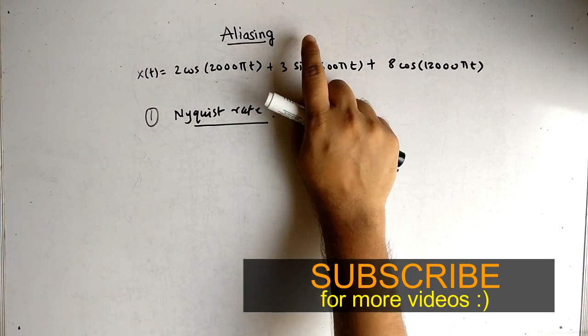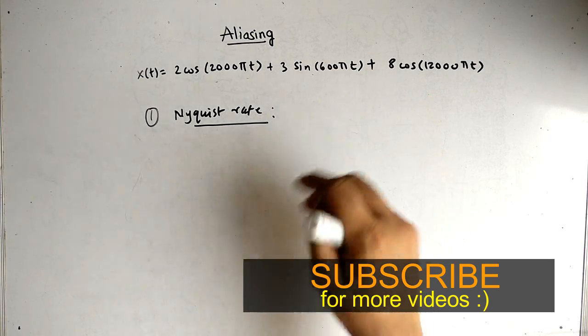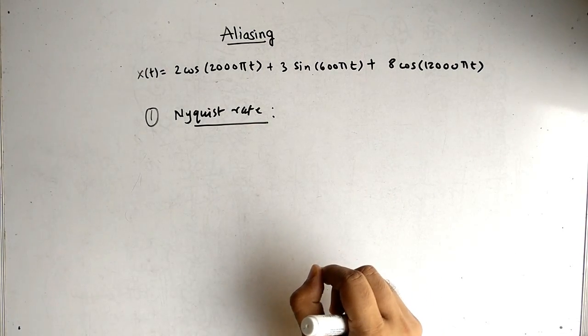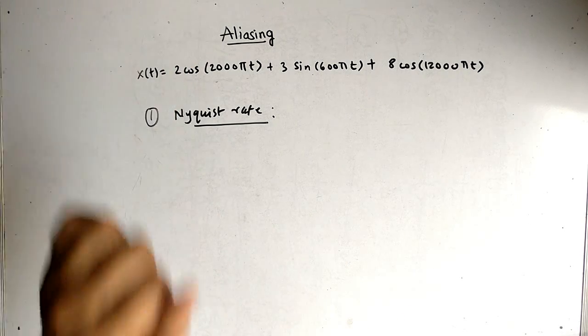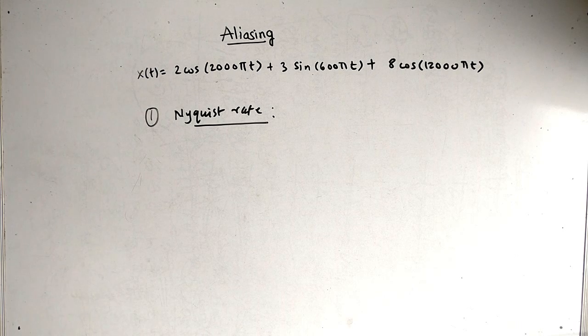So the topic for today is aliasing. Basically we have the question x(t) is equal to some equation and we are asked to find the Nyquist rate. The significance of Nyquist rate is that it helps to avoid the aliasing problem, that is the overlapping of two signals. So let's see how to find that.